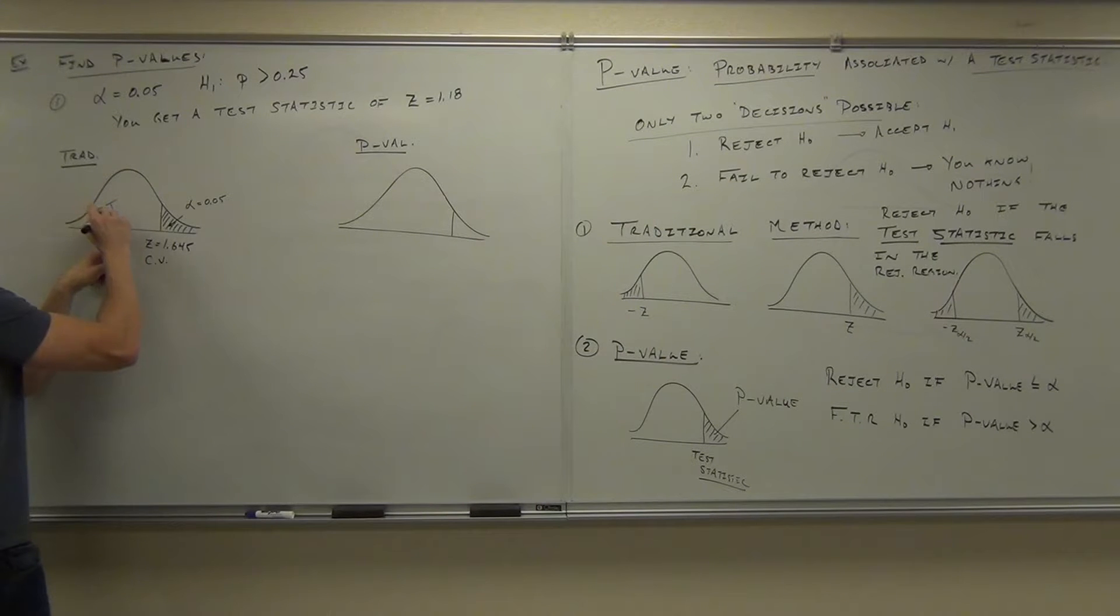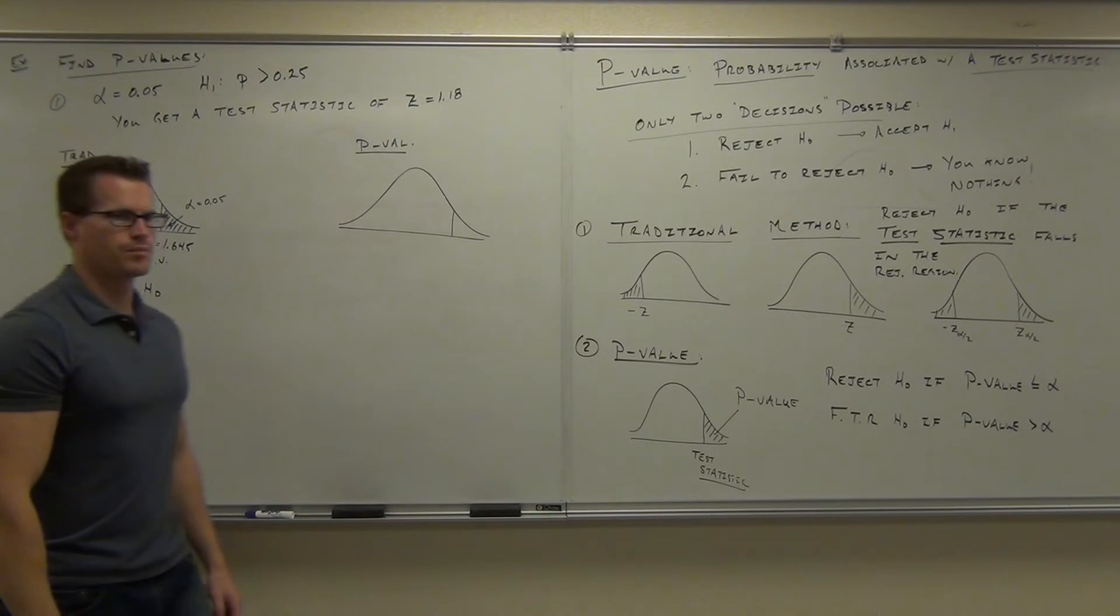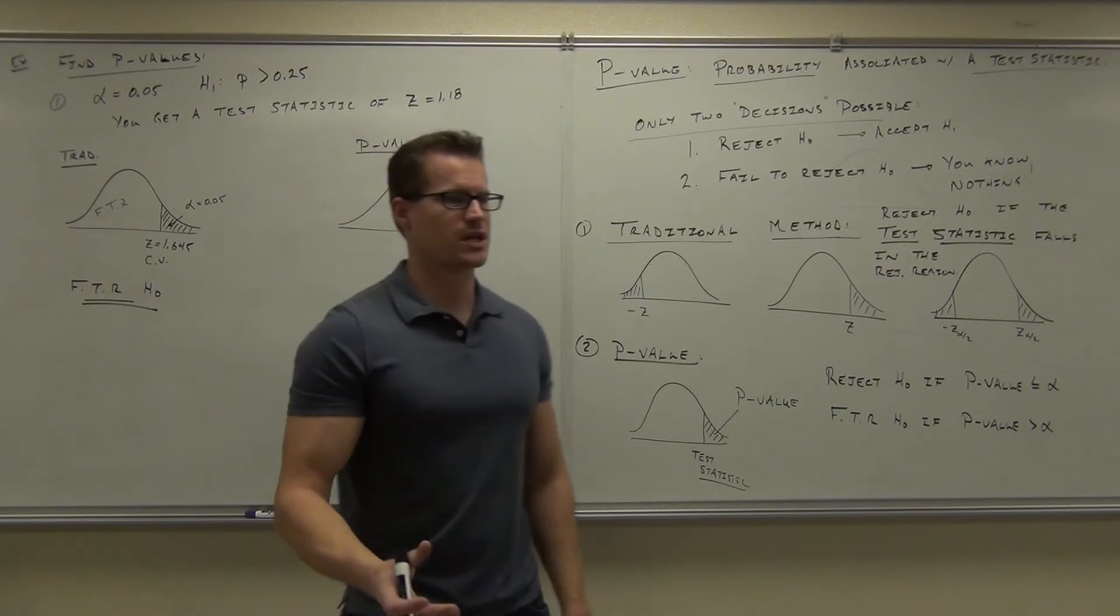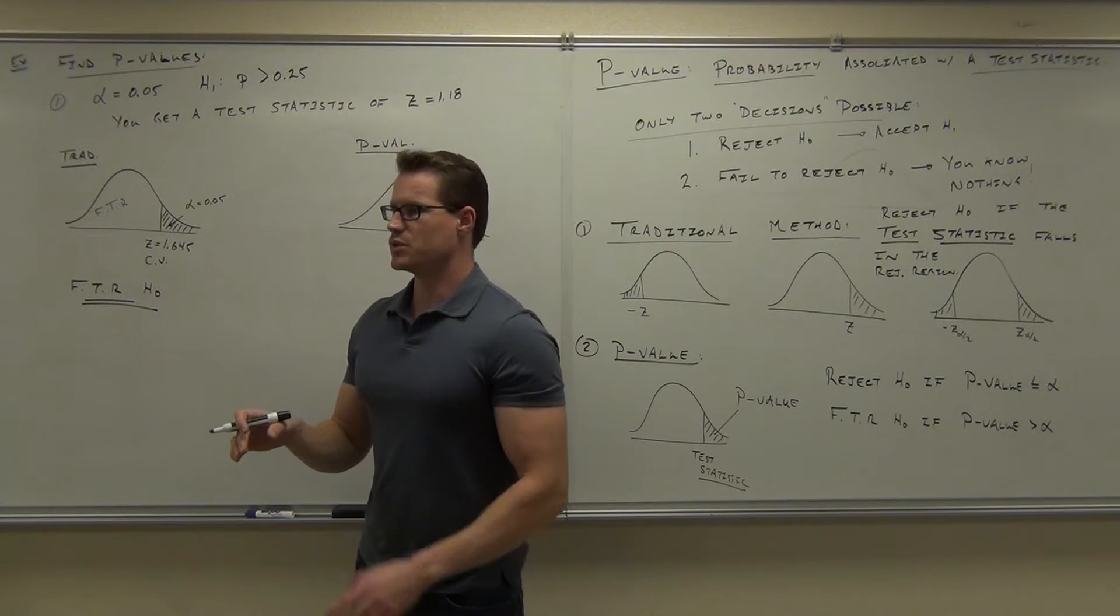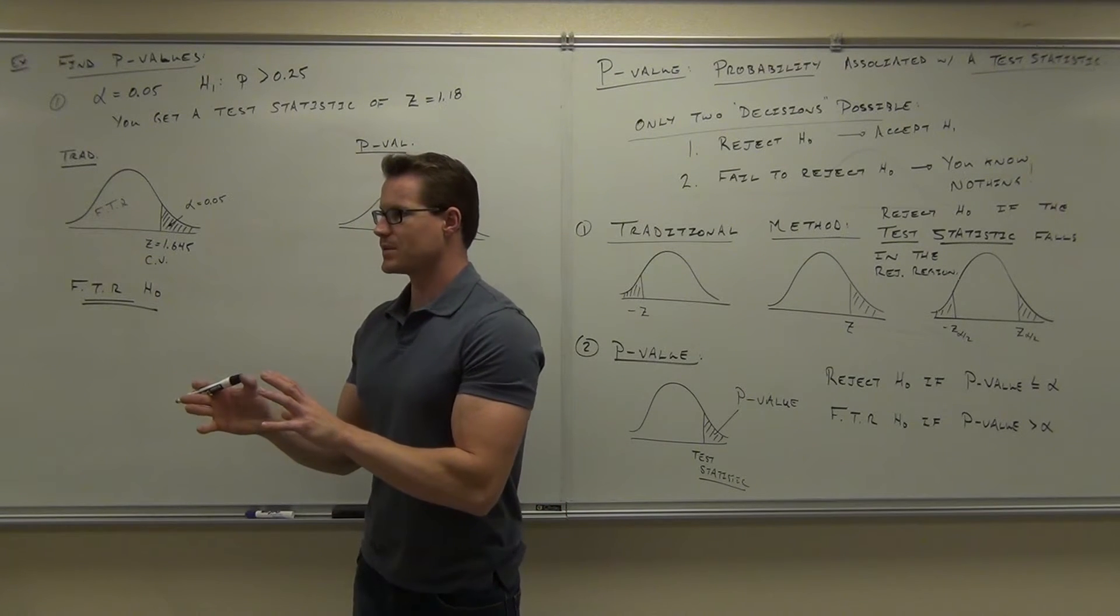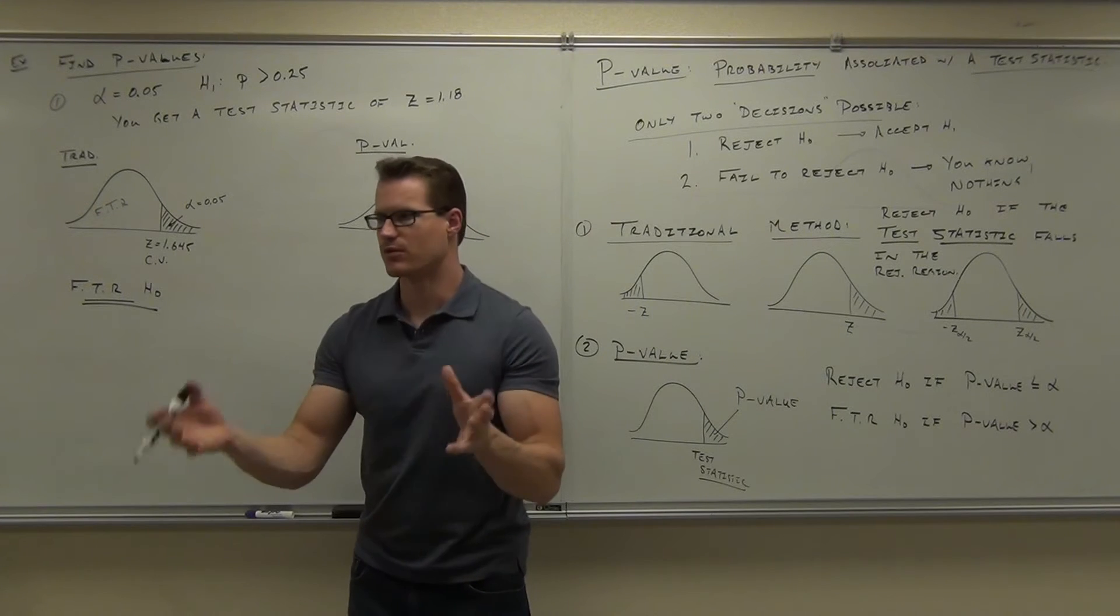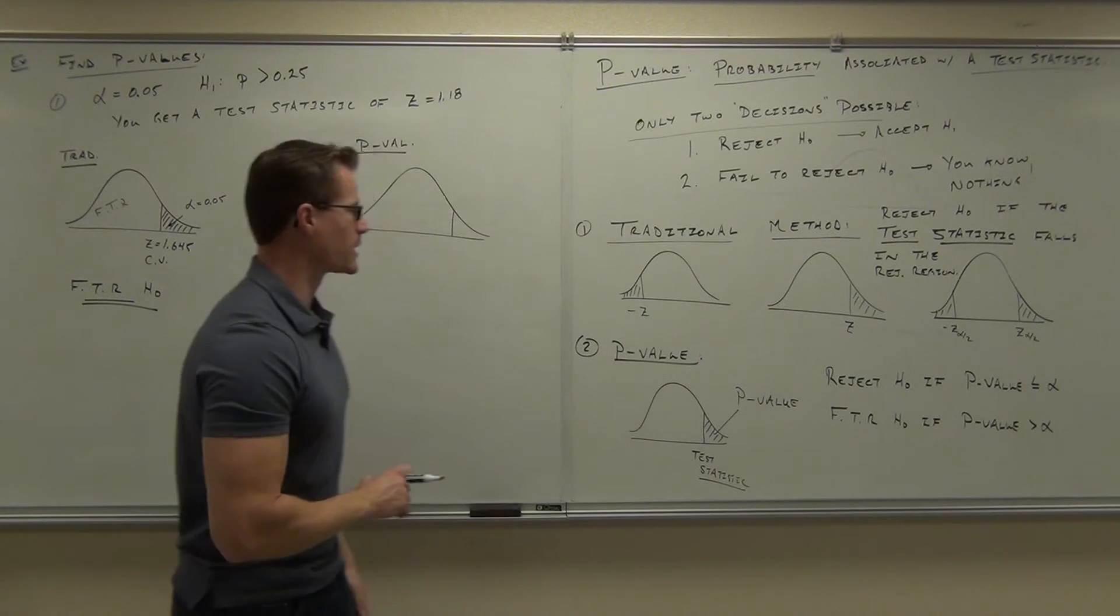Fail to reject. So your decision would be fail to reject H₀. In English, we'll deal with interpretation just a bit. It would be there's not enough evidence to support the claim that whatever we're talking about. There's not enough evidence, you fail to reject.